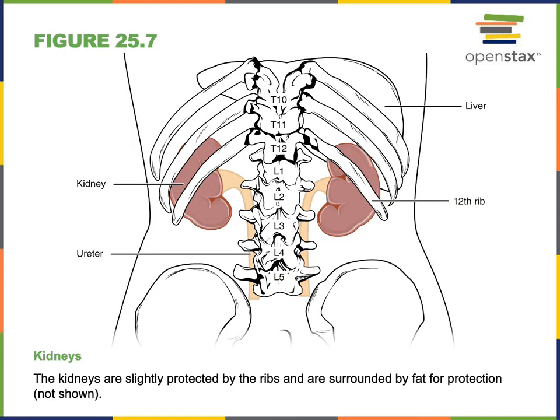The kidneys are a pair of organs located within the abdominal cavity, just posterior to the peritoneal membrane. They're located within the lumbar regions of the abdominal pelvic cavity, protected on the posterior surface by the floating ribs. The right kidney is a little more inferior than the left kidney because the large right lobe of the liver occupies a large amount of the upper right abdominal quadrant.